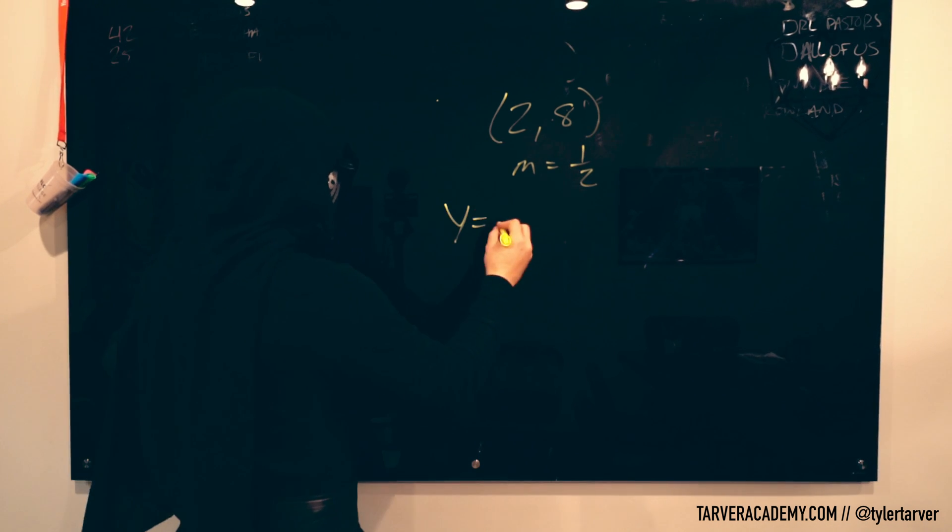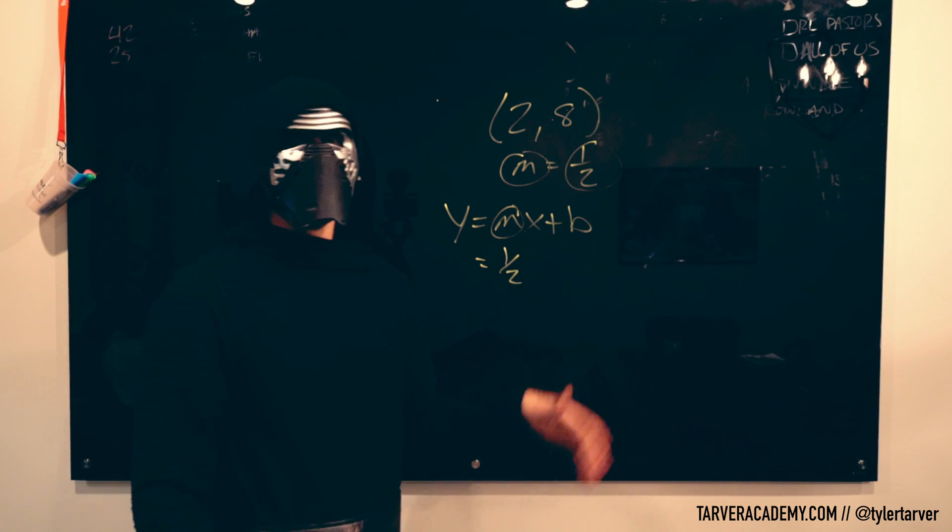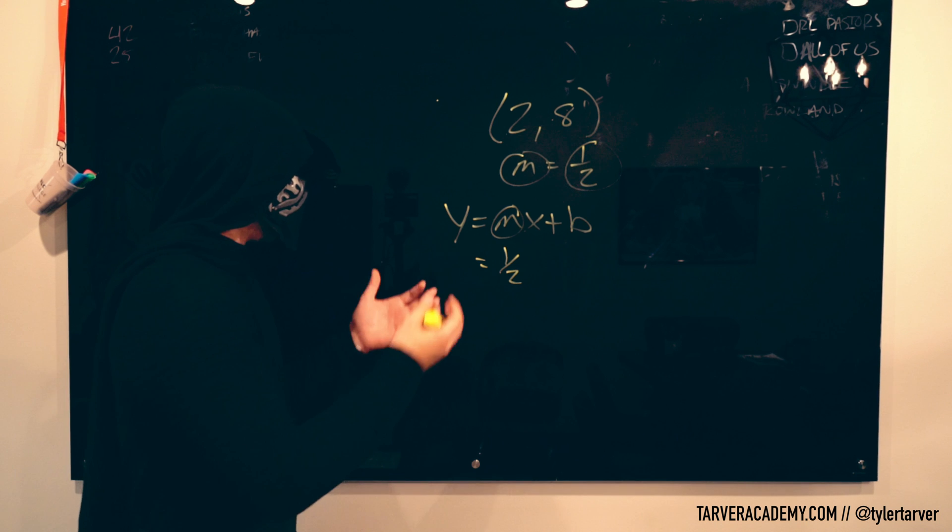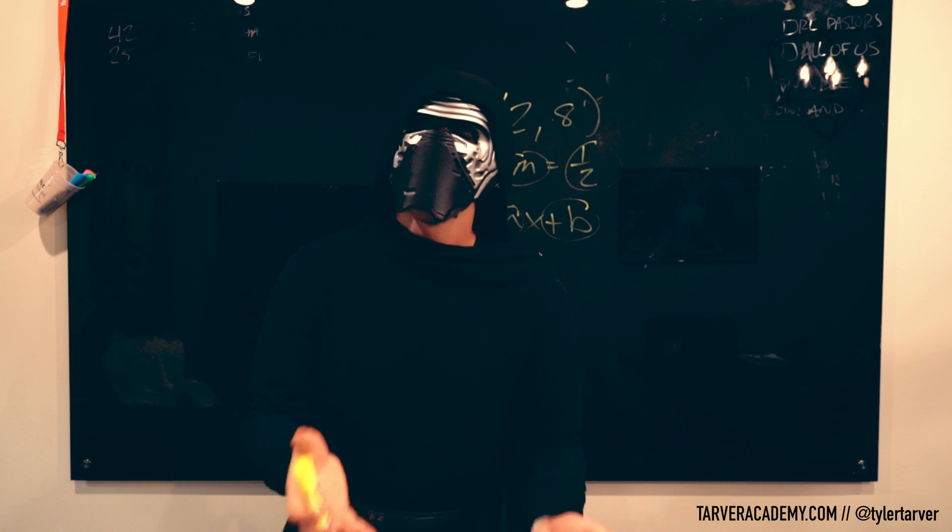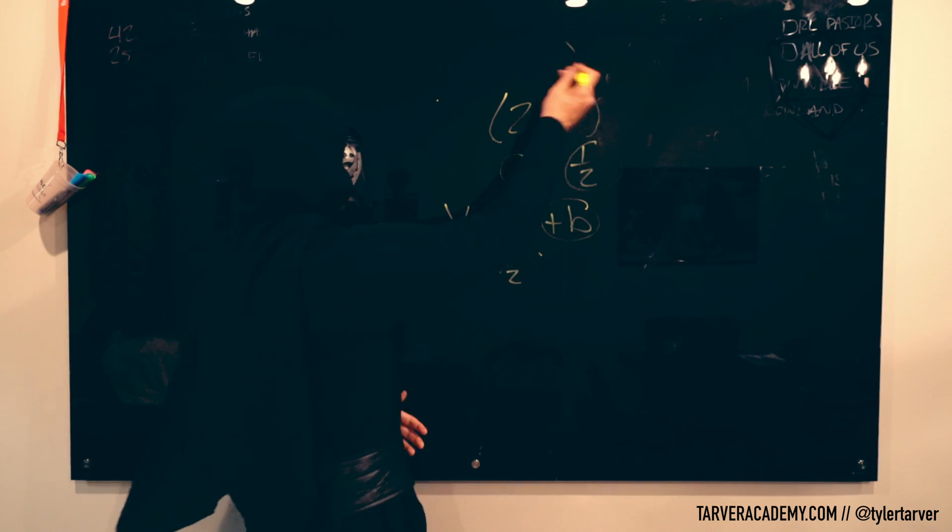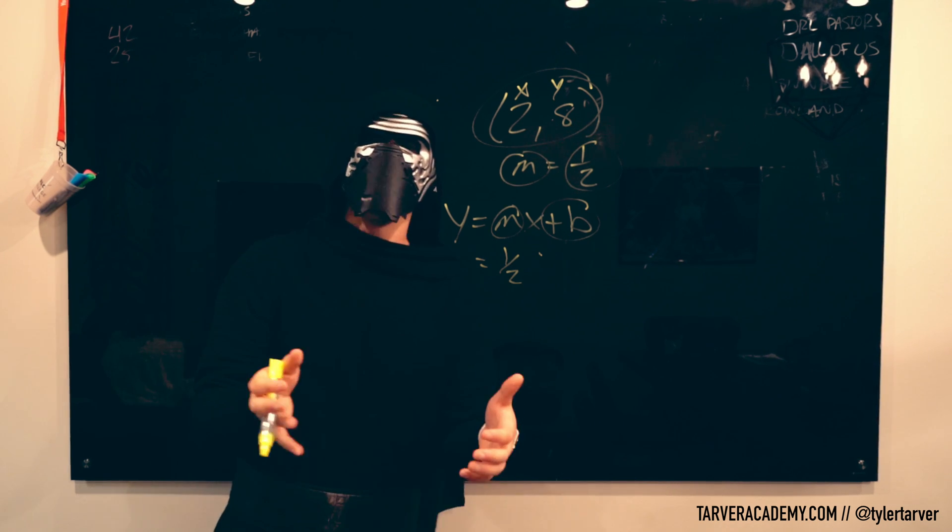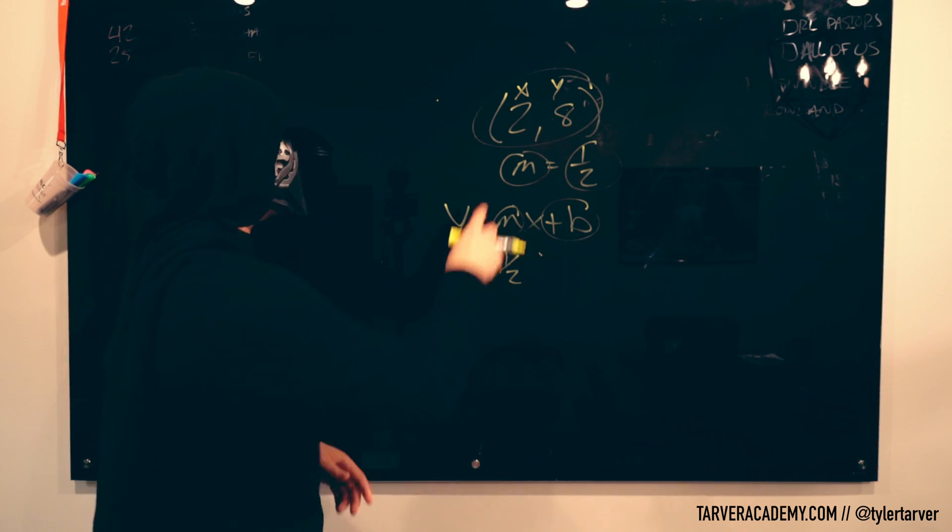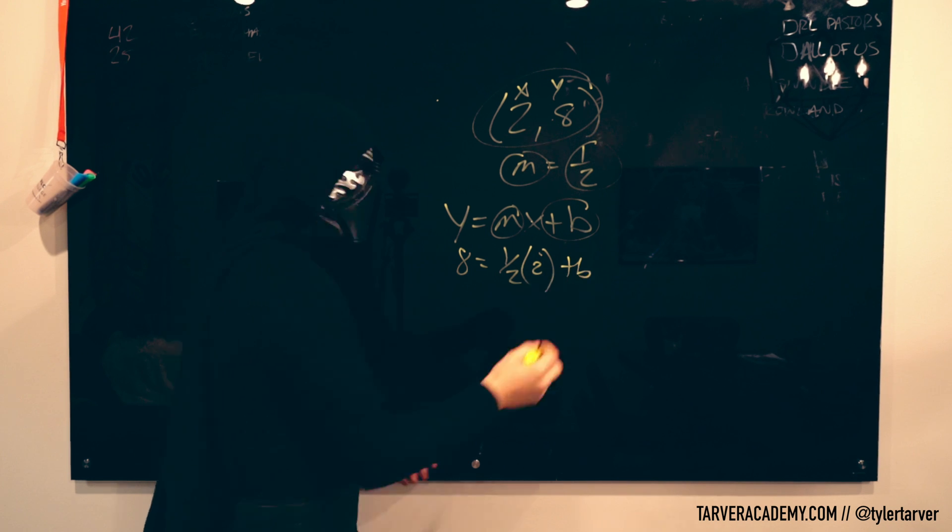All we do is plug in what we know to find what we do not know. So let's write our formula out and then we plug in what we know. We know our m is one half, so that's going to be one half. And we don't know the b, we don't have our y-intercept. But we have a coordinate, so I can plug those in, x and y, and solve for my b. x is two, my y is eight.